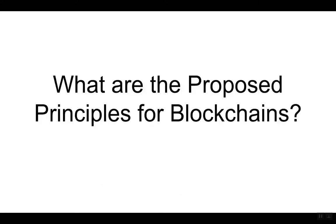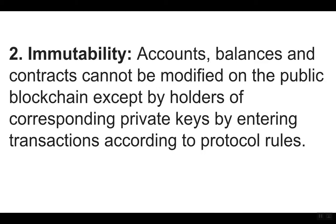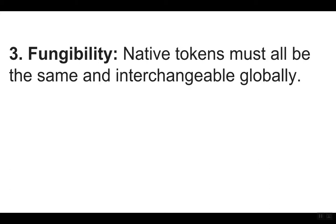What are the proposed principles for blockchains? One: trust minimization — to reduce the reliance on trusted third parties for processing transactions and posting programs and smart contracts. Two: immutability — accounts, balances, and contracts cannot be modified on the public blockchain except by holders of corresponding private keys by entering transactions according to protocol rules.